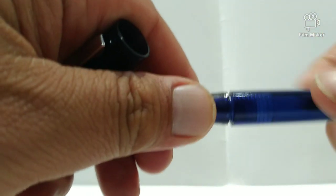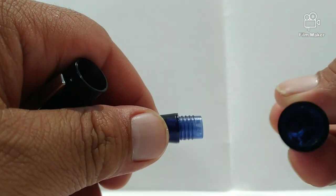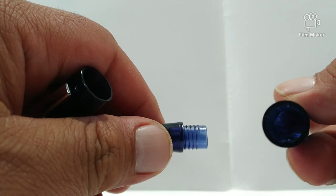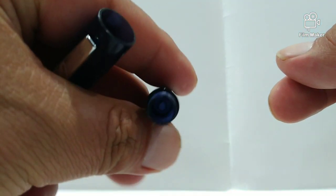Now we'll take off the barrel. It's that bit and we'll come to the section and this is where we put the ink in to refill it.